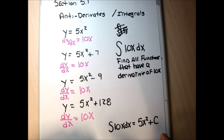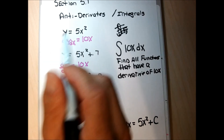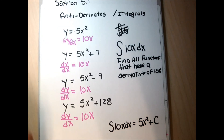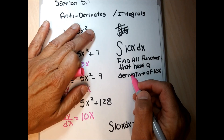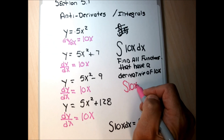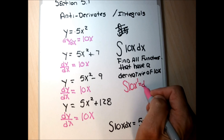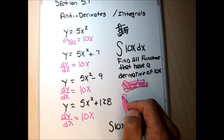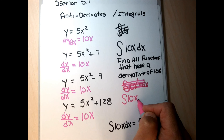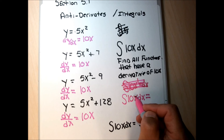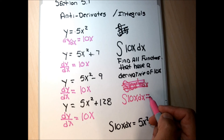To find an antiderivative, we do the reverse of differentiating. When we differentiate, we multiply the coefficient by the exponent and subtract 1 from the exponent. When we integrate, we do exactly the opposite: instead of subtracting 1 from the exponent, we add 1 to the exponent, and instead of multiplying by the new exponent, we divide by the new exponent.